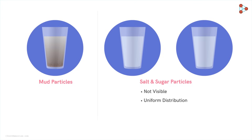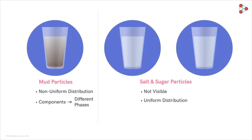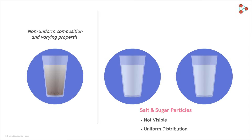There are two types of mixtures. In the first type, the composition is not uniform and the components are in different phases — you are able to see the different components separately. This type of mixture, which has non-uniform composition and varying properties, is called a heterogeneous mixture.